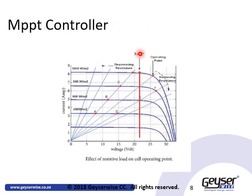On this slide we will illustrate the value of a maximum power point tracker in combination with a variable resistive heating element. From this we can see that with an MPPT and the variable resistive heating element, we will always obtain maximum power from the PV array.